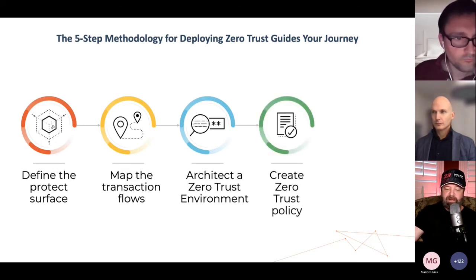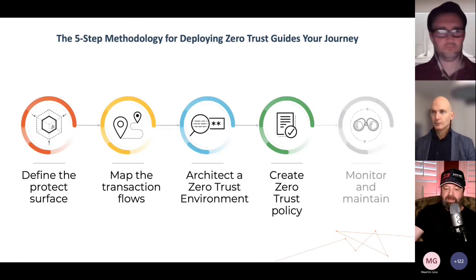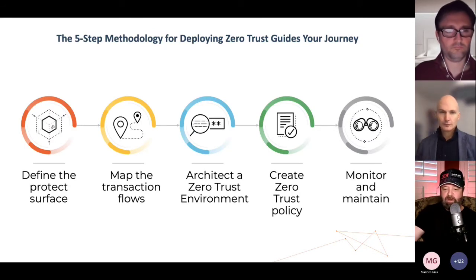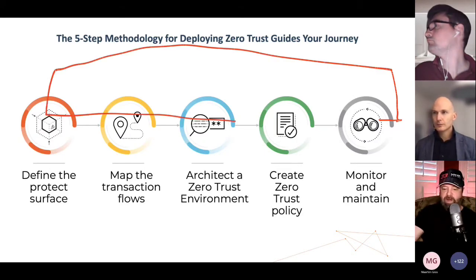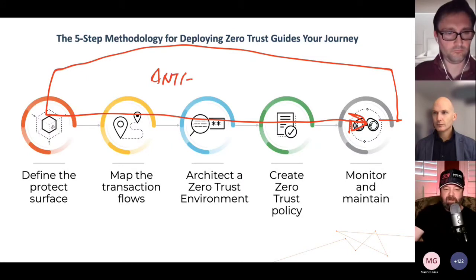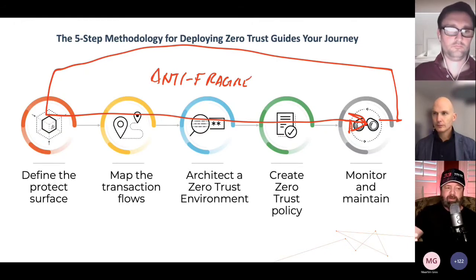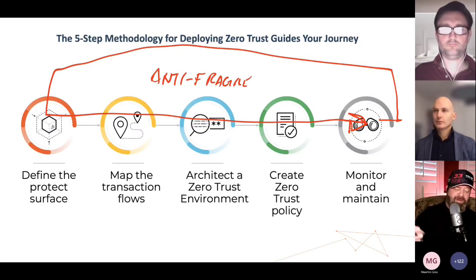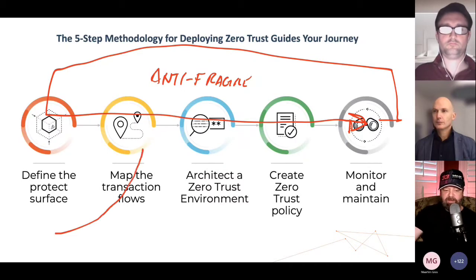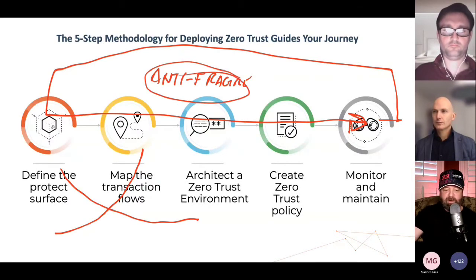The fourth step is creating policy — Zero Trust is ultimately instantiated as a policy statement. The fifth step is monitor and maintain. This is what we do at Ontuit: we take all the telemetry and learnings and re-inject them back into the system to create a feedback loop, building an anti-fragile system. If you're not familiar with anti-fragile, read the book 'Anti-Fragile' by Nassim Nicholas Taleb. We create a system that gets stronger and stronger the more it's under load, the more it's attacked. We see the number of events go up, but the number of manual interactions we have to do goes down.